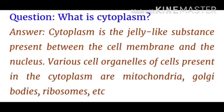What is cytoplasm? Cytoplasm is the jelly-like substance present between the cell membrane and the nucleus. Various cell organelles present in the cytoplasm include mitochondria, Golgi bodies, ribosomes, etc.